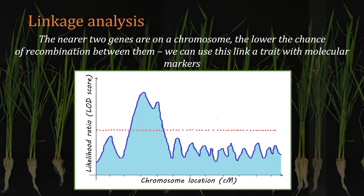Finally, we conduct a linkage analysis — the statistical step of the mapping process which allows us to identify QTLs. Linkage analysis relies on the concept that the nearer two genetic elements are on a chromosome, the lower the chance of recombination between them and the more often they co-segregate. The more specifically a trait segregates in the F2 generation with a specific molecular marker, the more likely that molecular marker is close to a gene influencing our trait. Programs for linkage analysis use a probability threshold to identify additive genetic loci influencing our trait of interest.